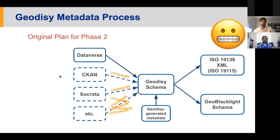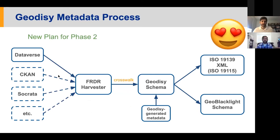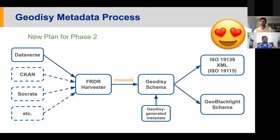Our new plan, thanks to our friends at Portage and FRDR, is to take advantage of the FRDR harvester. FRDR is an existing tool — they already have all those crosswalks in place going to their harvester from various repositories. So all it requires on our part is to build a crosswalk from the FRDR harvester to our own Geodisy schema, and then we can take advantage of all the metadata crosswalking transfers that are already in existence. The only thing we needed to add was some additional capacity in the FRDR harvester for collecting the geospatial information that Geodisy needs.